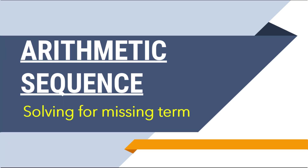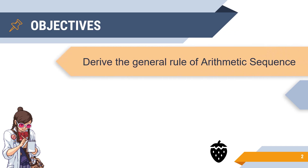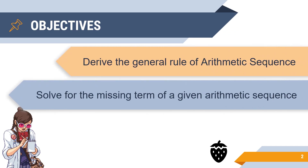Hi guys! Welcome to another episode of Learn with Sir Glenn. Our topic for today is Arithmetic Sequence: Solving for the Missing Term. Let's lay out our objectives: derive the general rule of arithmetic sequence, and solve for the missing term of a given arithmetic sequence.